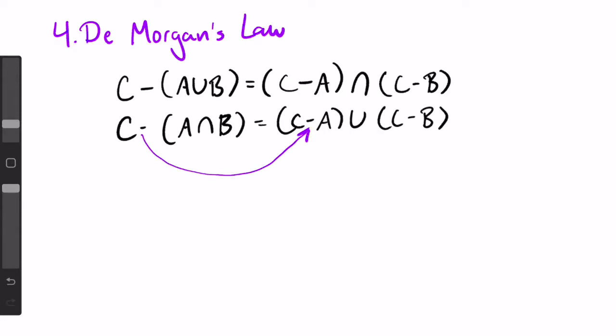Basically, you distribute the minus within the parentheses and then you flip the operation being used. A visualization of this is in the example problem, so make sure to check those out at the link in the description.